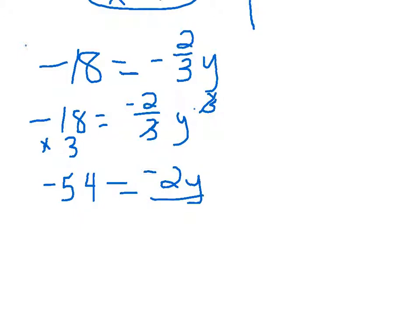And when we rewrite this side, all we have left is negative 2y. Finally, we need to get rid of the negative 2, so we divide. And on this side, we have y. And negative 54 divided by negative 2 is going to be a positive 27.